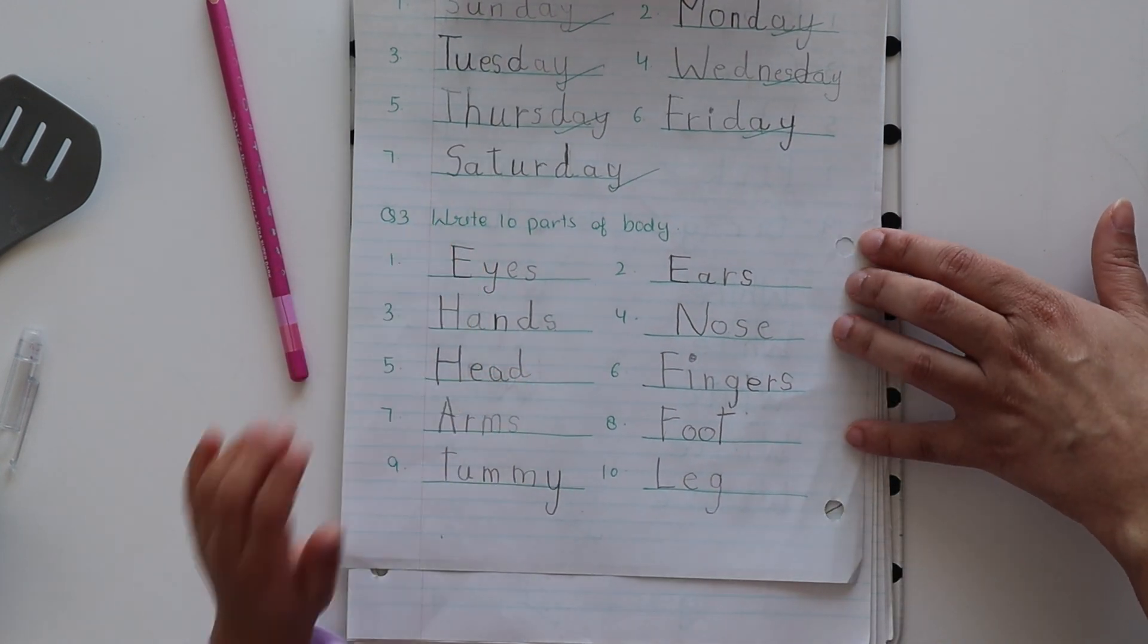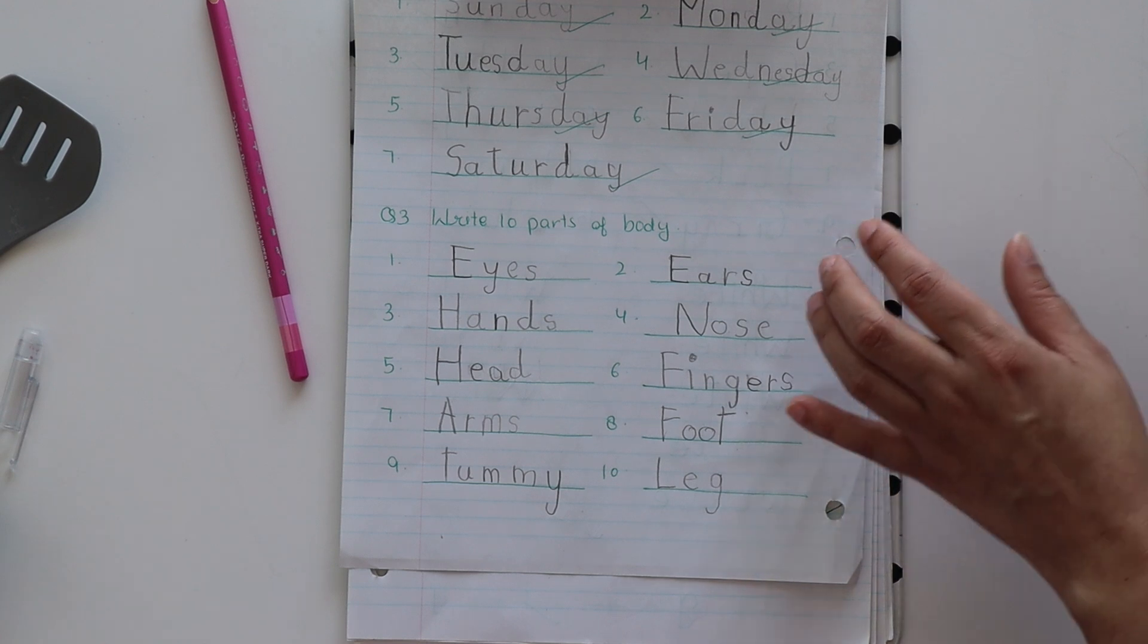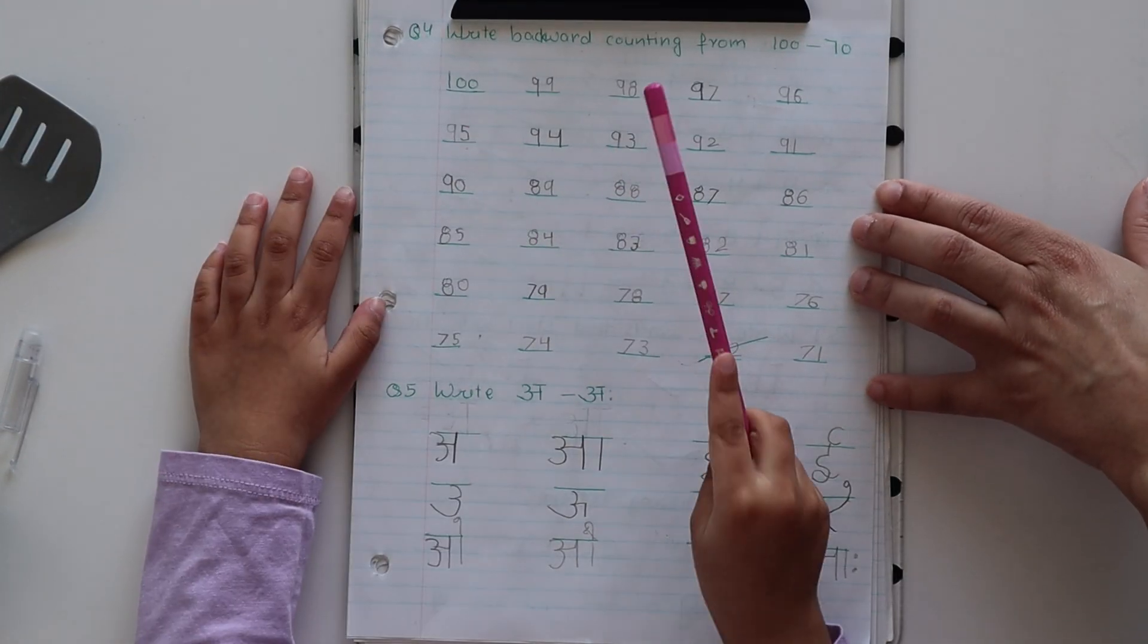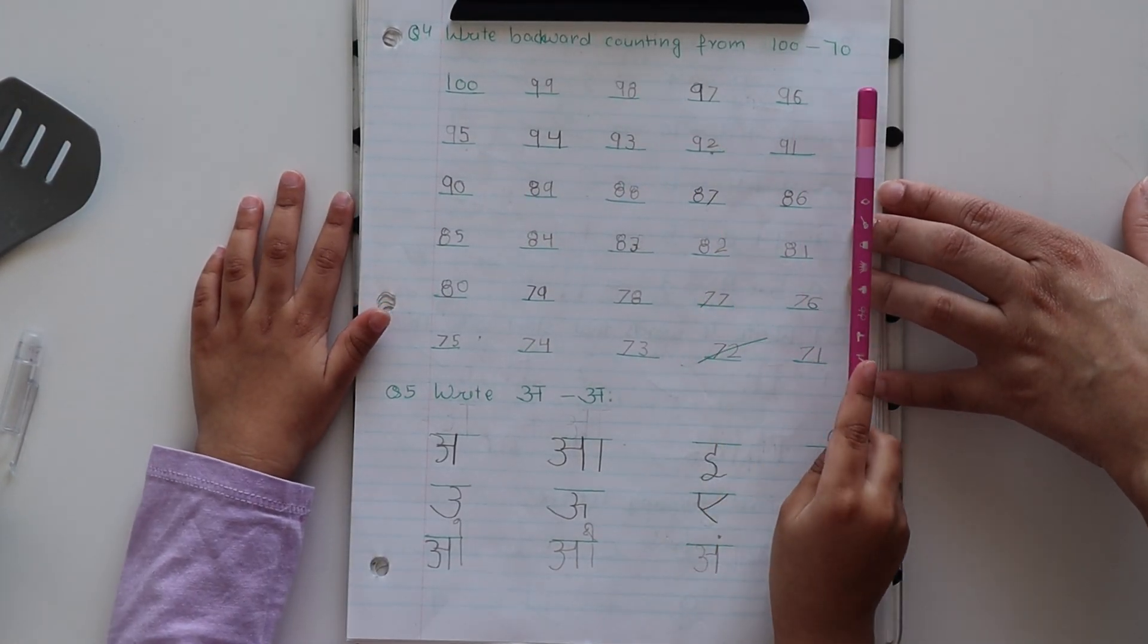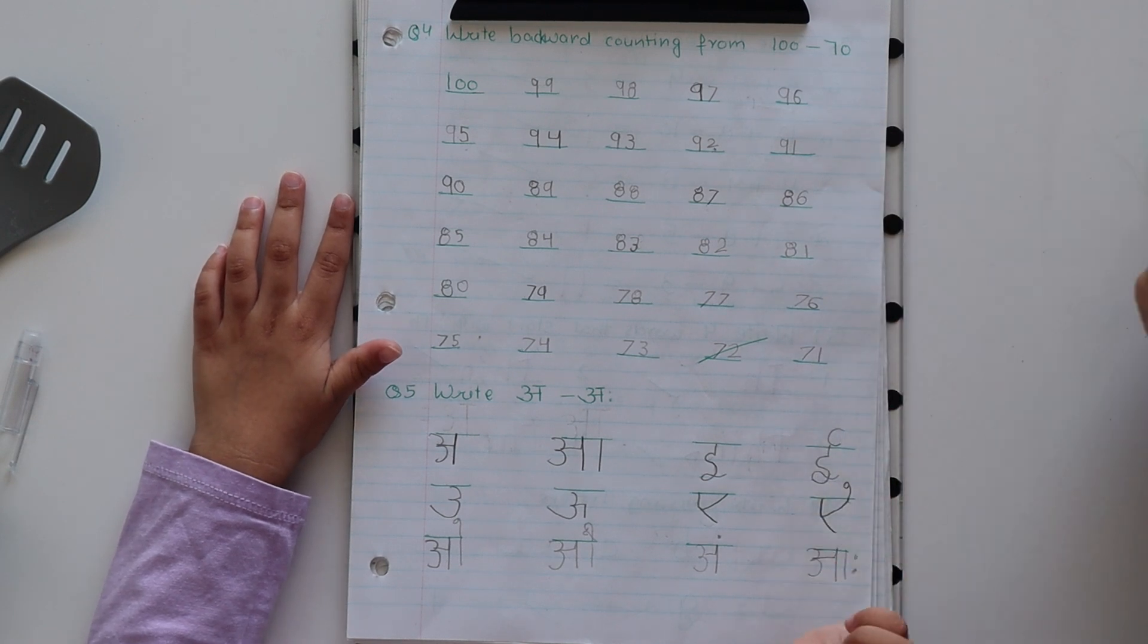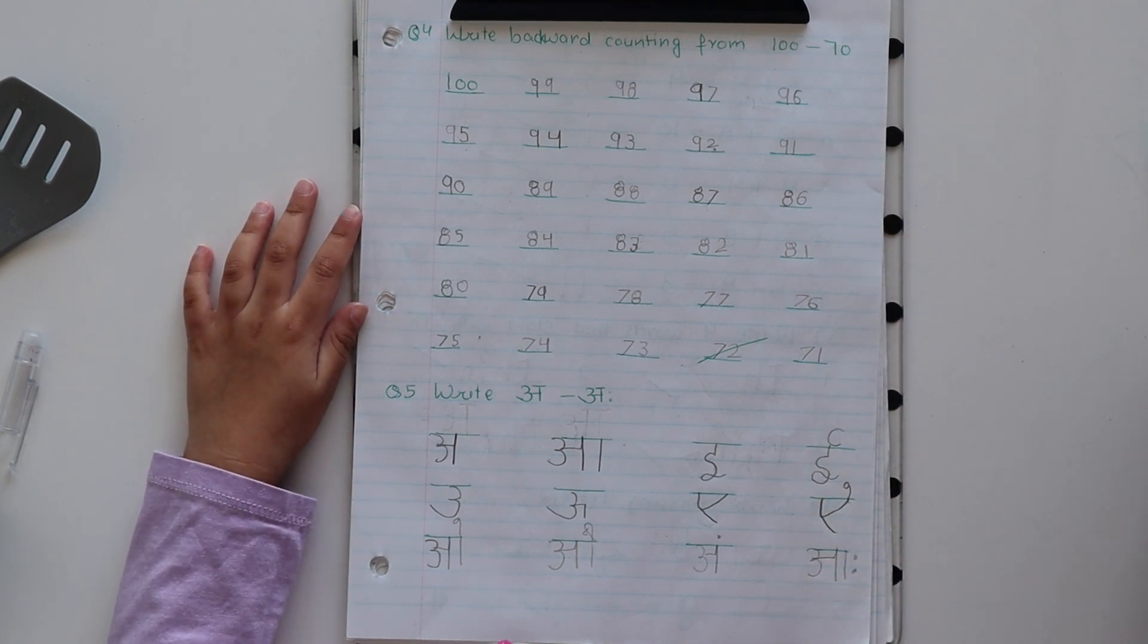Very nice. These are body parts my mom asked me to do. Okay, good job. What is this? Write backward counting from 100 to 70. Very nice. Very nice. And you did it nicely. Next.